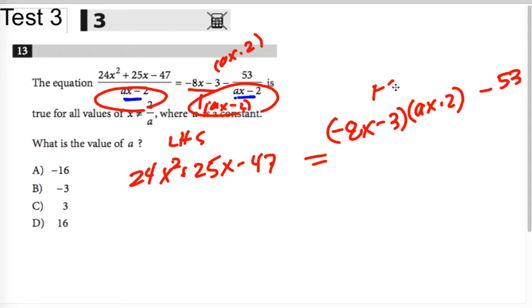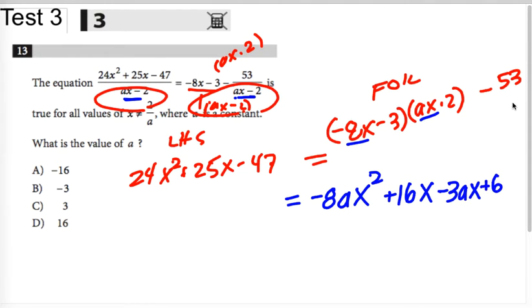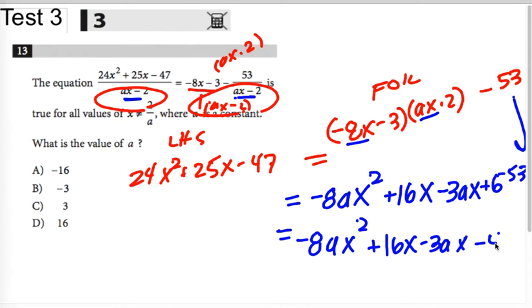I'm going to foil this out, clean it up, and find the terms that are equal here. When I foil this, I get negative 8ax squared, that's first. Outer is going to be plus 16x. Inner is going to be minus 3ax. Last is going to be plus 6, and don't forget the minus 53. So I get negative 8ax squared plus 16x minus 3ax minus 47.